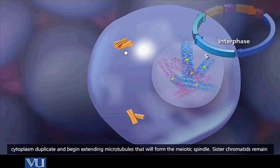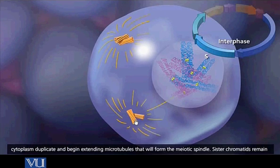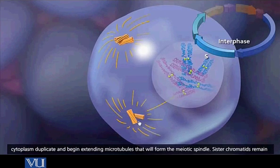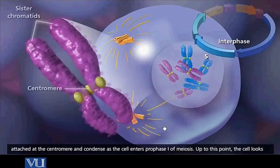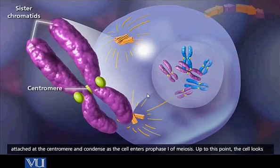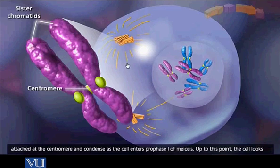The first thing that happens is the centrioles divide. The centrioles are the centers from where the microtubules will originate. When the cell enters prophase, the chromosomes have started to condense and the centrosomes have divided and now they are moving towards the opposite poles in the cell.